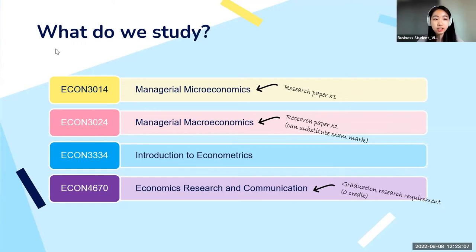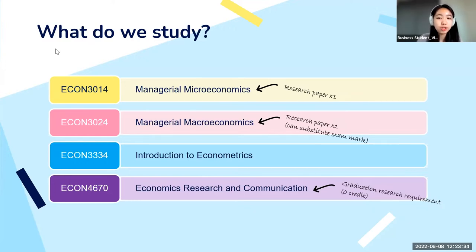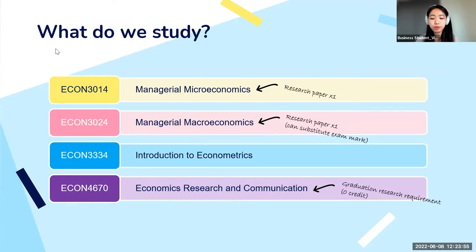The fourth required course, ECON 4670 Research and Communication, is a zero-credit requirement where you complete a research project. Looking at the curriculum, a lot of courses include research papers. In the microeconomics course you write a short research paper of about 1,000 words; in the macroeconomics course you work in a team on a real research paper; and in the Research and Communication course you write an individual, longer research paper.